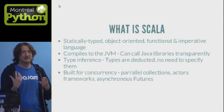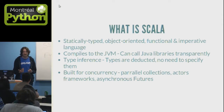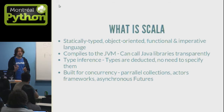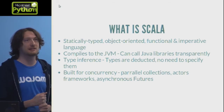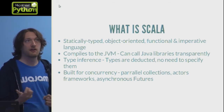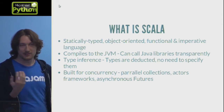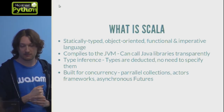Scala compared to Python is a statically typed language, but both of them are object-oriented, functional, and imperative hybrid languages that you can use to mix and match programming styles. You can use a more functional approach when it's appropriate, or a more imperative approach, for example, if you want more performance. It also compiles to the Java Virtual Machine, so you can pretty easily call any Java libraries from it.